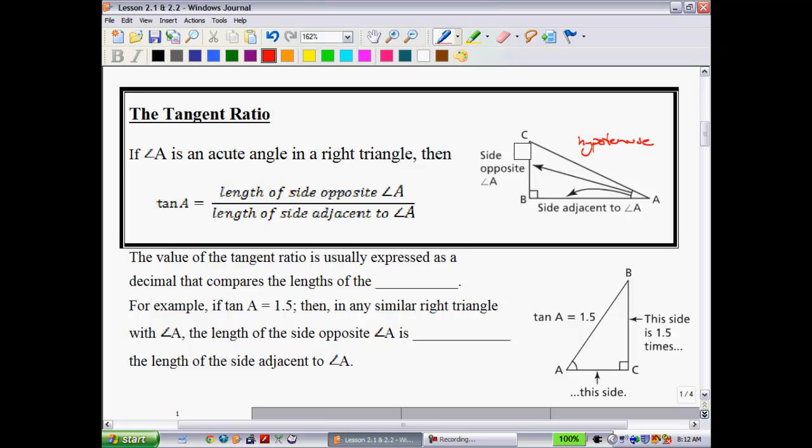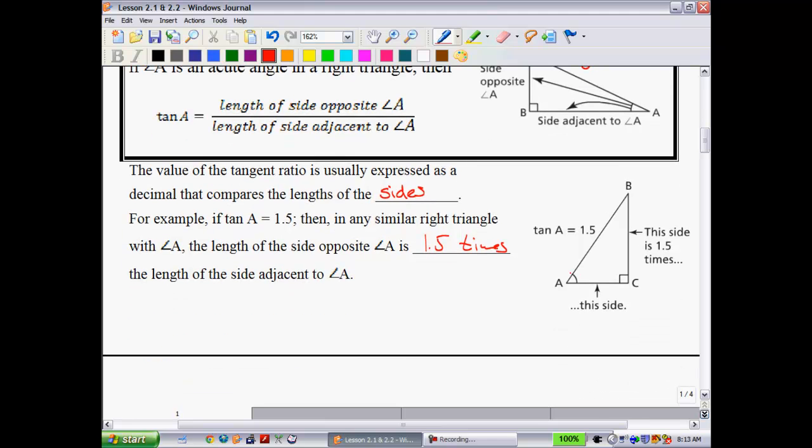The value of the tangent ratio is usually expressed as a decimal that compares the lengths of the sides together. For instance, if tan A is equal to 1.5, then what it means is in any similar right triangle with angle A, the length of the side opposite angle A is 1.5 times the length of the side adjacent. So we're always saying that whatever's on top, whatever that ratio is, that's going to be what the relationship is to the adjacent side.